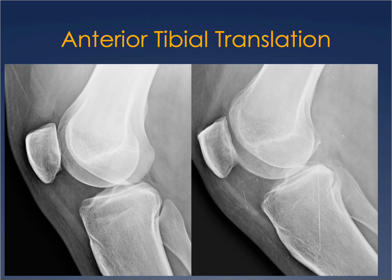Another subtle clue of ACL abnormality is anterior tibial translation. To assess this, draw a line parallel to the patellar tendon and another parallel to the anterior cortex of the tibia above the tibial eminence. The V-angle formed between these lines will be narrowed in a patient with anterior tibial translation. Narrowing of that angle is a good clue for anterior tibial translation and ACL insufficiency.